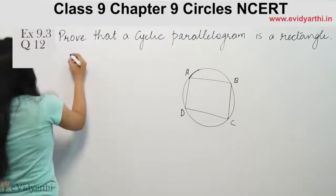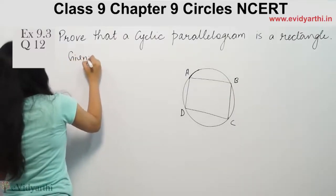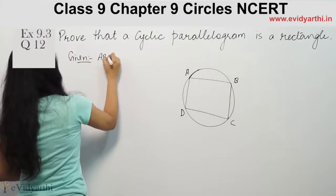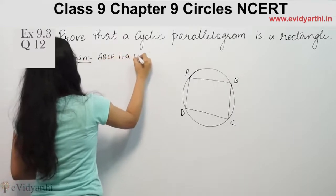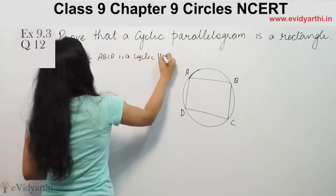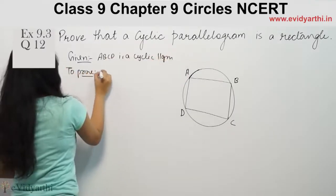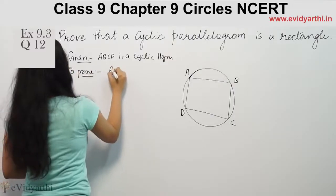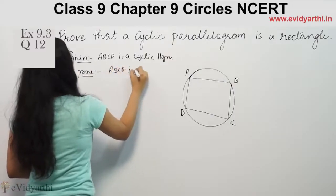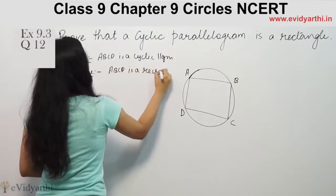Given: ABCD is a cyclic parallelogram. To prove: ABCD is a rectangle.